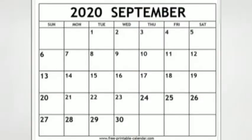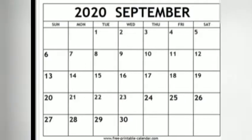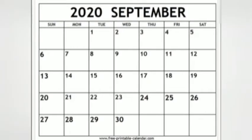See this calendar, children. This is the 2020 September calendar — this month's calendar. What is today's date, children? Today's date is 2nd September, and that is on Wednesday.